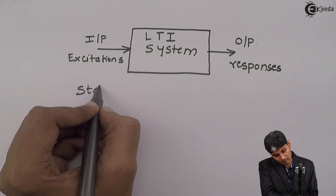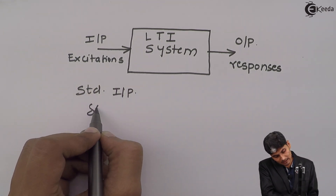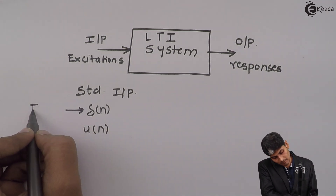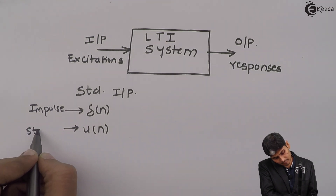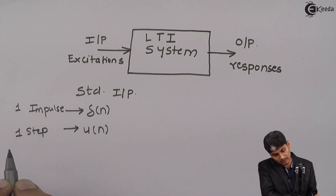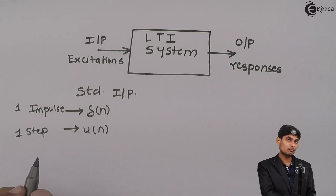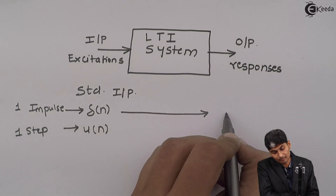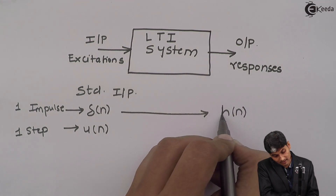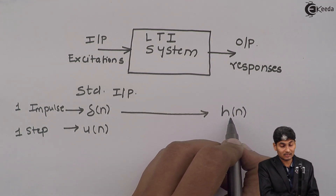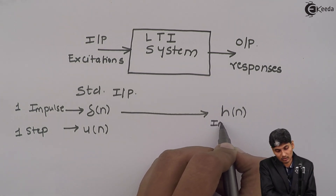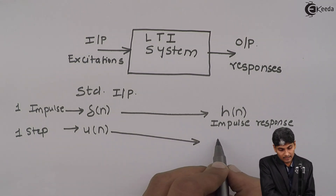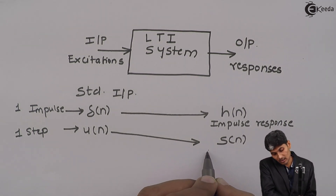The standard inputs that will be applied are delta of n, which is the impulse, and u of n, which is the step — specifically the unit impulse and unit step, where the height is one. The response obtained when we apply the unit impulse is called the impulse response, denoted as h of n. When we apply u of n, the response we get is called s of n, which is the step response.